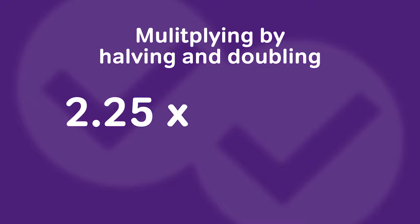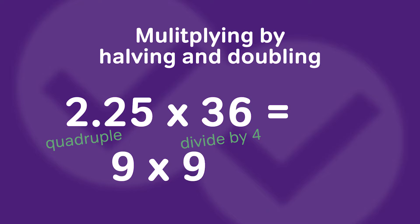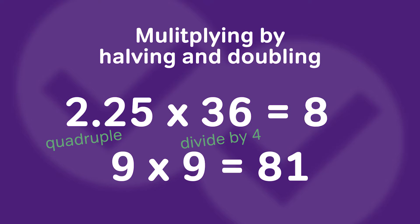2.25 times 36. What should we do here with that 0.25? Well, if we doubled it, we'd still have 0.5. But if we quadrupled it — multiplied it times 4 — we'd get the zero at the end. So 2.25 times 4: let's double it once to get 4.5, then double it again to get 9. So now we have to reverse-quadruple 36, or essentially just divide 36 by 4, which is 9. So 2.25 quadrupled is 9, and 36 divided by 4 is also 9. So 2.25 times 36 is 81 — the same as 9 times 9.